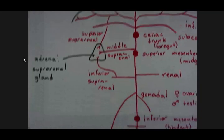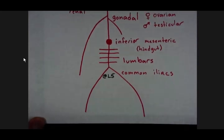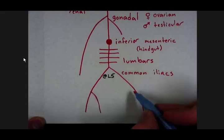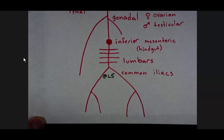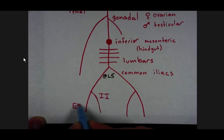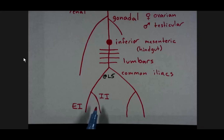And I did want to come down and finish the story for the common iliacs. Common iliacs will bifurcate into internal iliac and external iliac. And you do need to remember this because you will be looking for a lot of branches of the internal iliac artery when we get to the pelvis next week. So what can I clarify about these abdominal aorta branches?